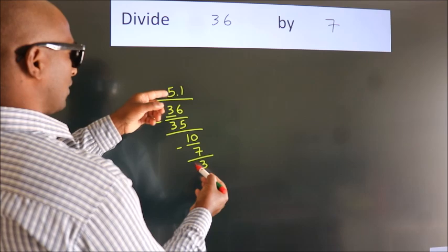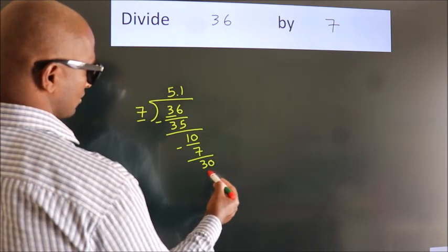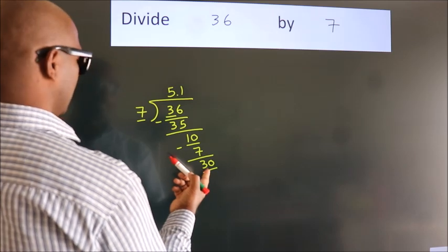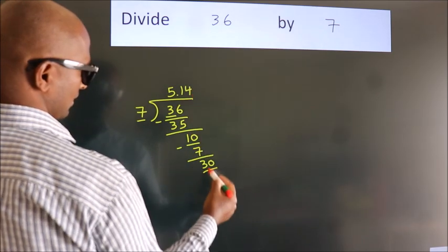After this, we already have the decimal. So, directly take 0. So, 30. A number close to 30 in 7 table is 7 fours, 28.